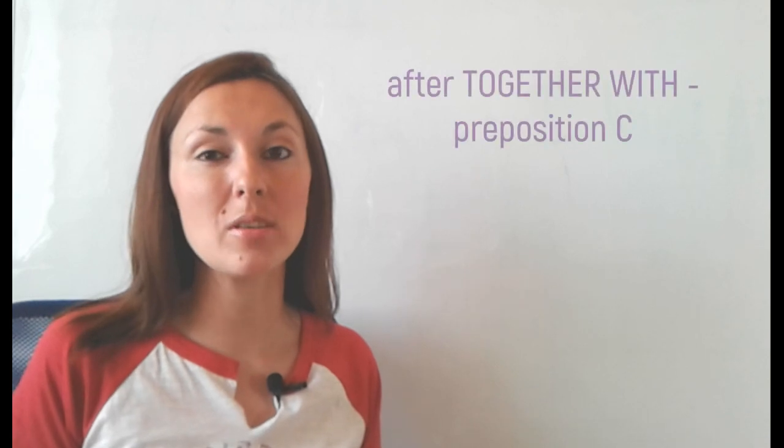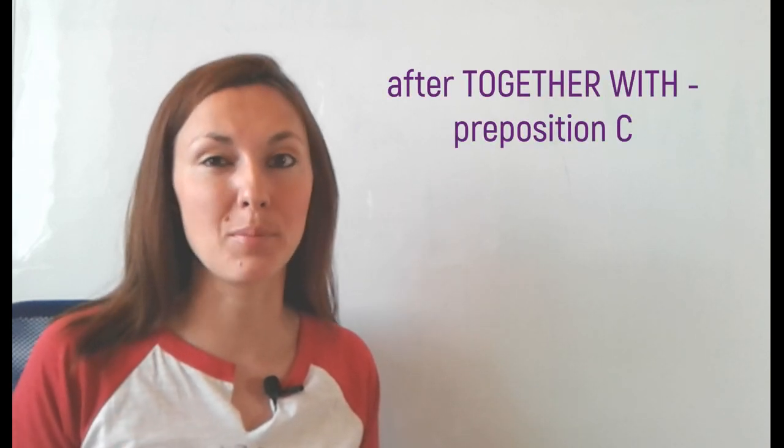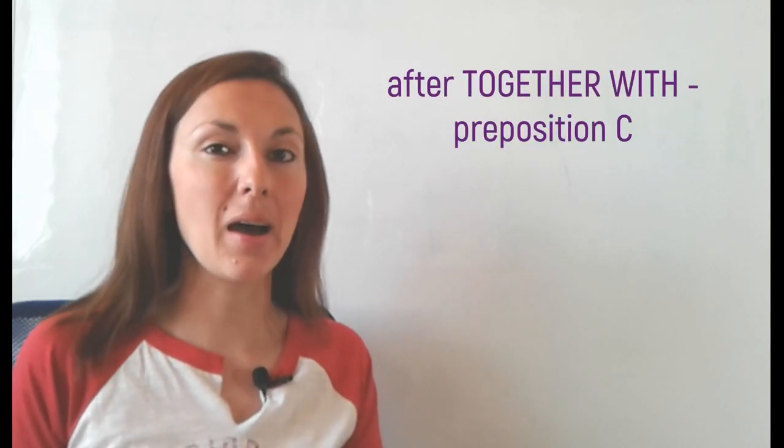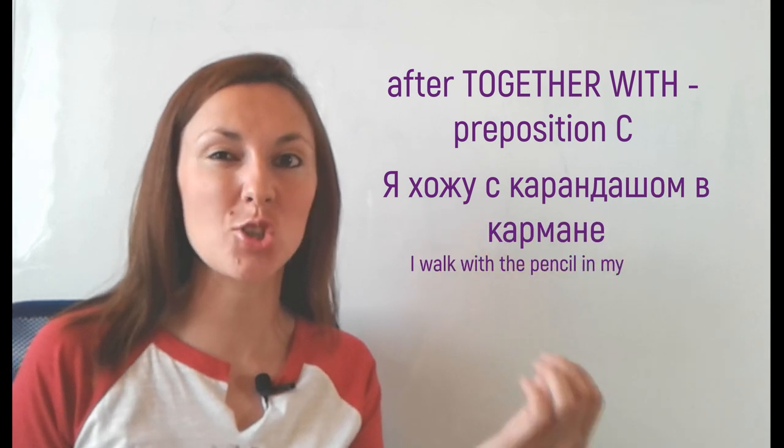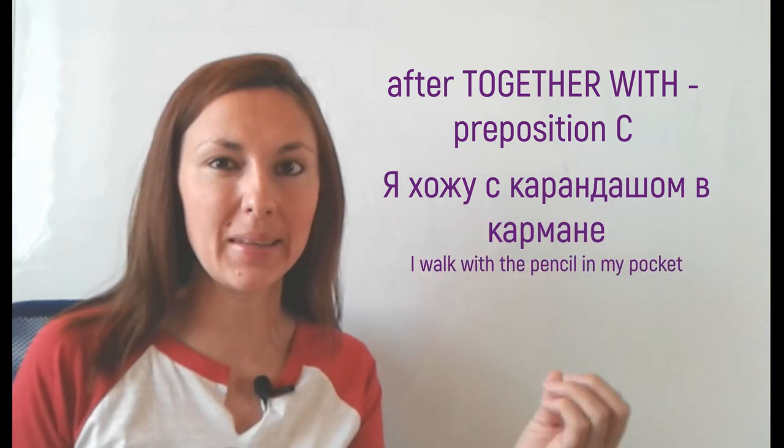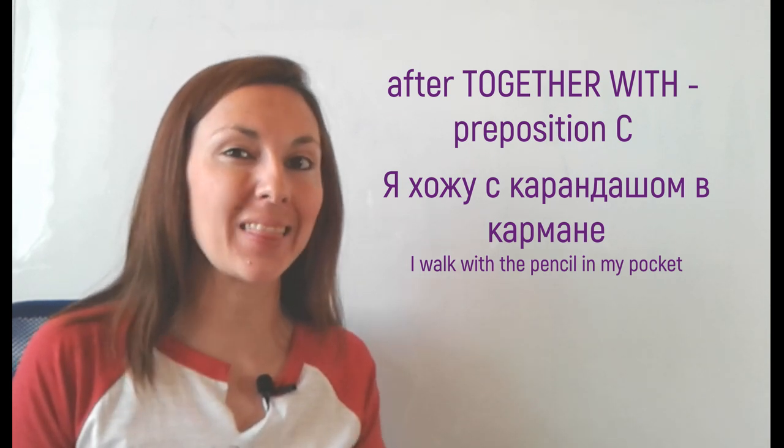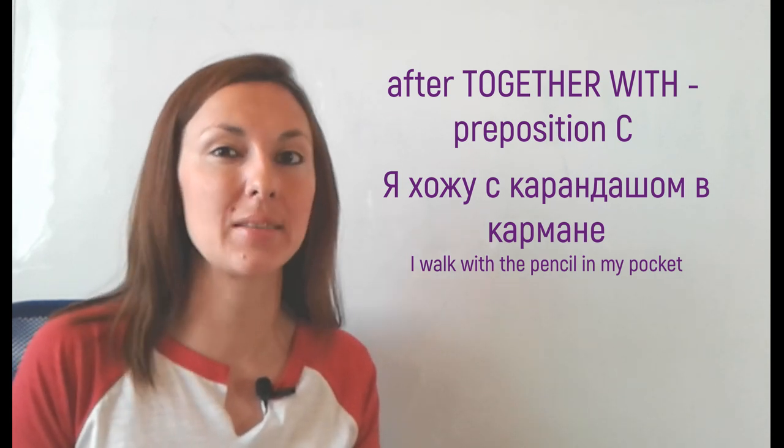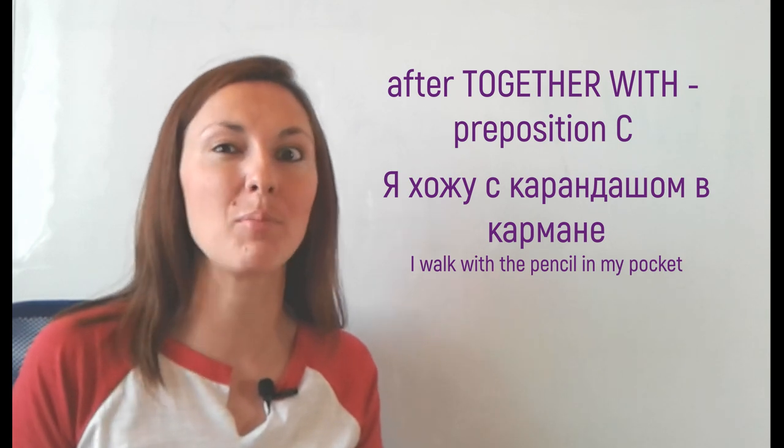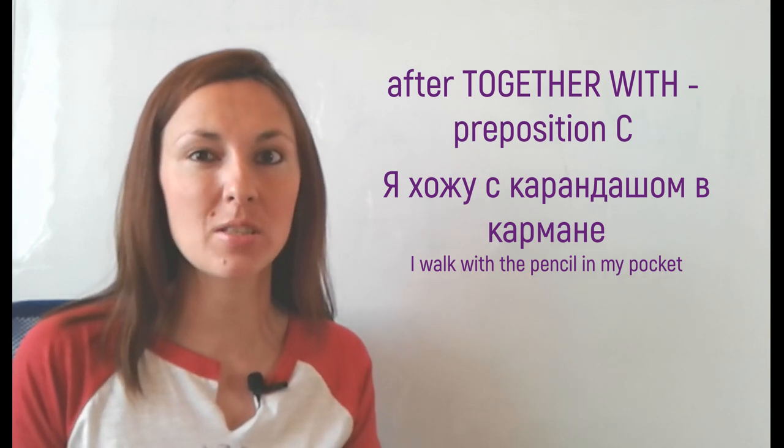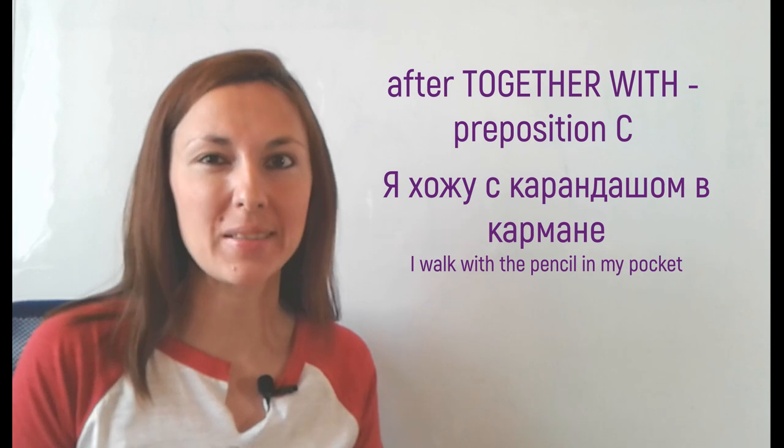The second one is we use instrumental case after together with. In Russian it is preposition С. Я хожу с карандашом в кармане. Can you see? Now карандаш, a pencil, is not a tool. I just have it in my pocket, I am just walking with the pencil.